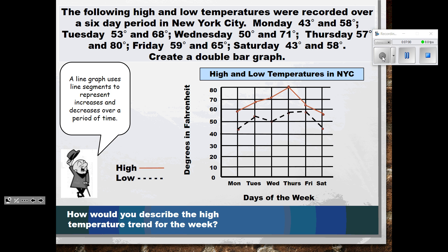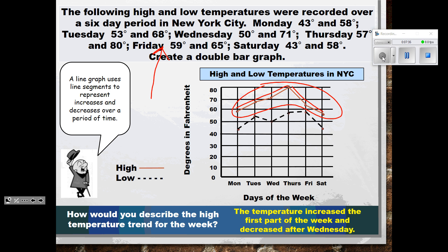How would you describe the high temperature trend for the week? It is much easier to see the trend by looking at the line graph. Looking at the red line, the temperature was increasing Monday through Thursday, and starting with Thursday it began to decrease. To describe that with words: the temperature increased the first part of the week and decreased after Thursday.